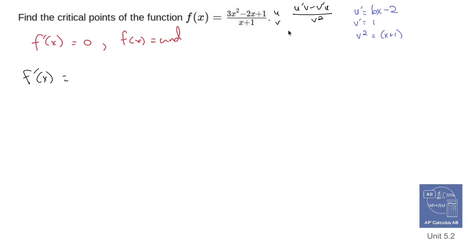So let's put it all together. U prime v is going to be 6x minus 2, v, which is going to be x plus 1. So there's going to be foiling there, minus v prime, which is 1. That's nice. U, which is 3x squared minus 2x plus 1. And that's going to be all over x plus 1 squared. Let's set it equal to 0.